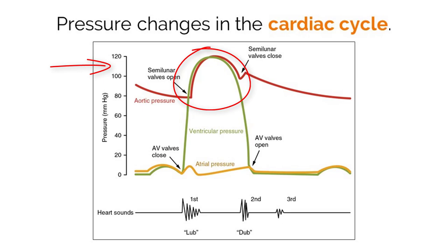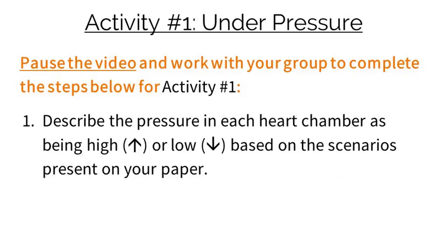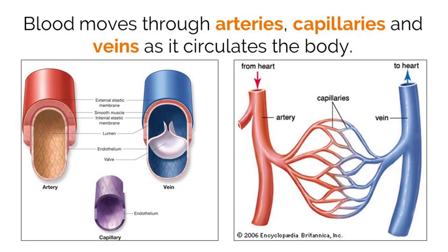The ventricles need to push blood at high pressure because they have to move blood either throughout the entire body or to the lungs. If there were low pressure generated by these chambers, the blood would not move very far, which would be detrimental to our survival. The highest pressure comes from the left ventricle moving blood through the aorta as oxygenated blood travels to all parts of the body.